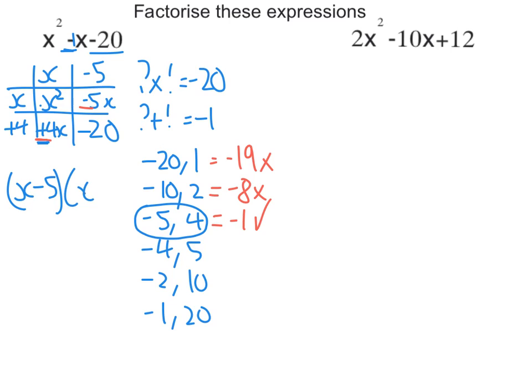Let's move to the next one. The only way that the grid method really falls down is if there's a common factor. Now in this example here I can take out a factor of 2 before I do anything else, because I get 2 times x squared minus 5x plus 6.